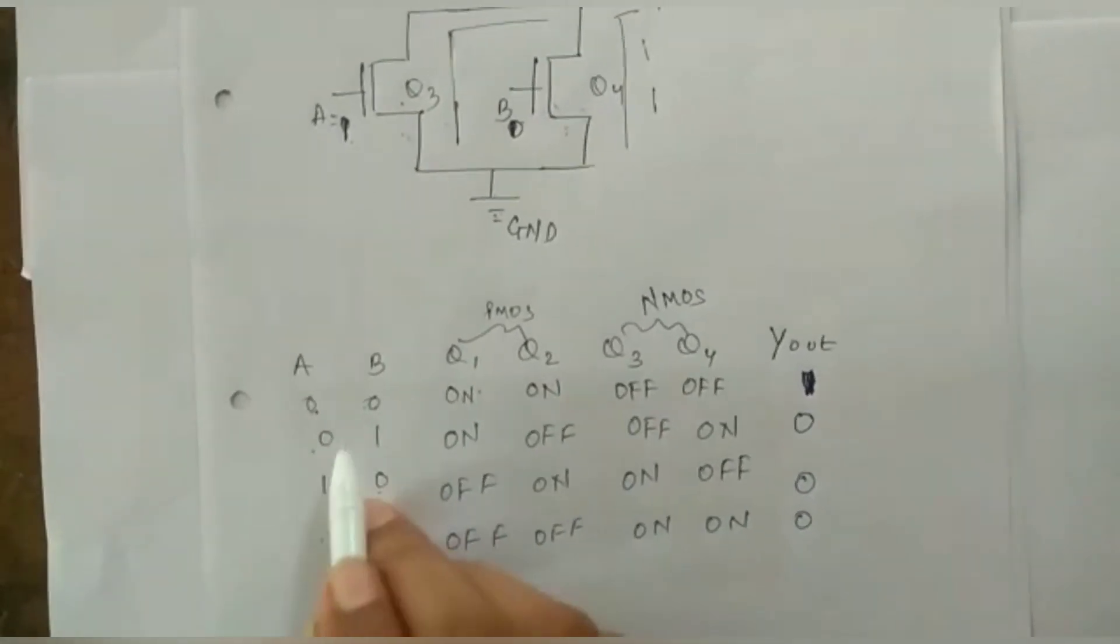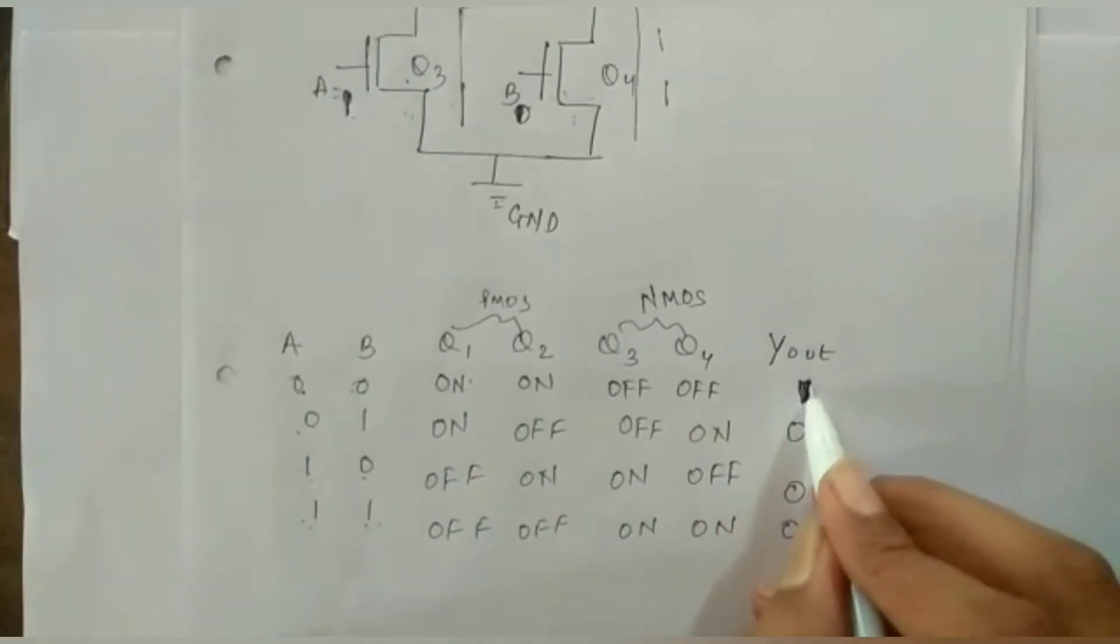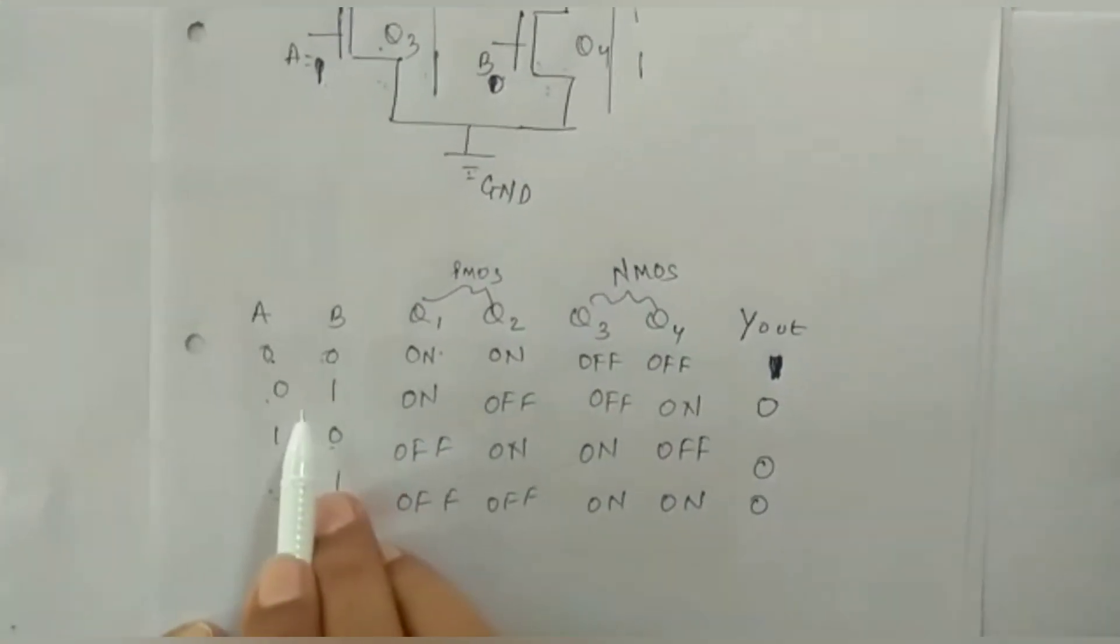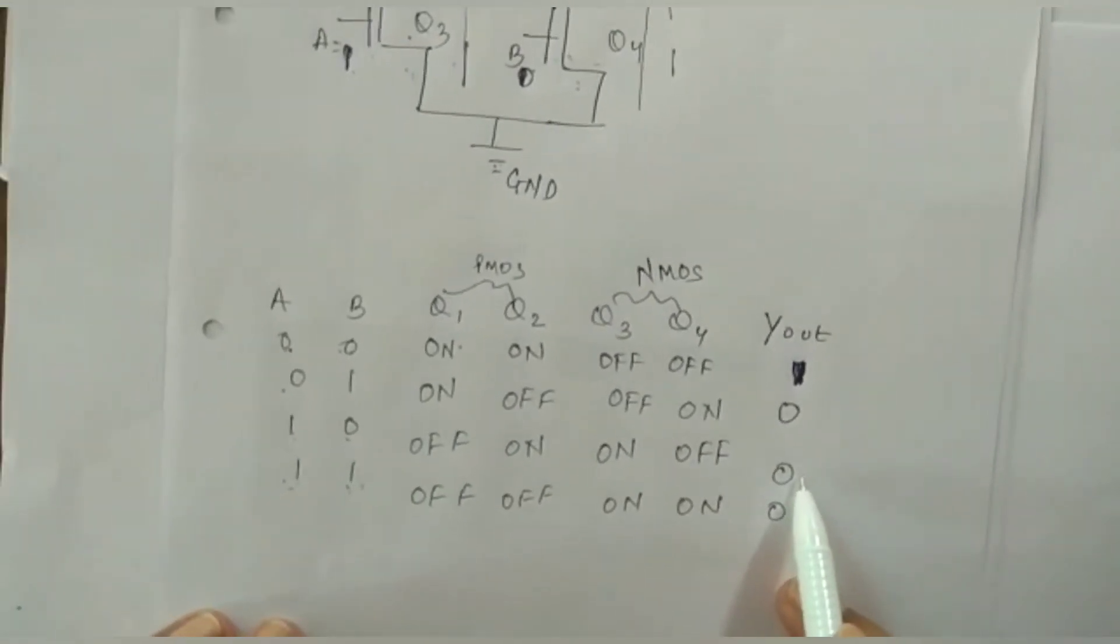So from here we can conclude that when it is both 0 the output is going to be 1. When one of the variable is 1 the output is going to be 0. Thank you.